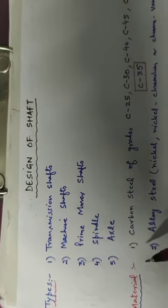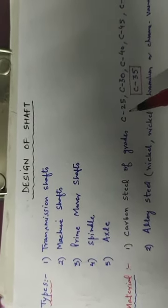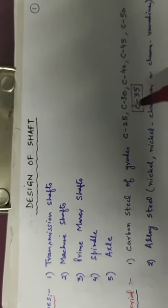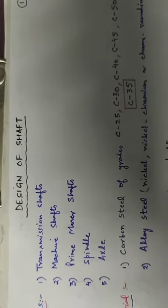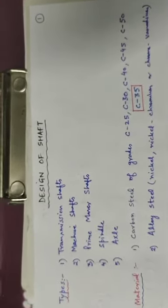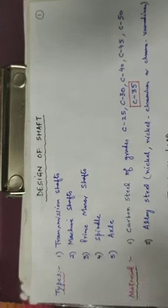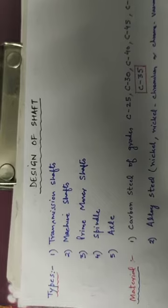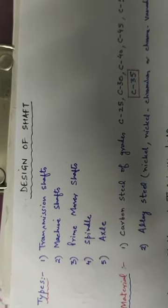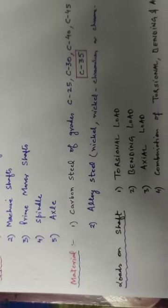The commonly used material for the shaft is carbon steel of grade C25, C30, C40, C45, C50, where 25, 30, 40 refers to the percentage of carbon — 0.25%, 0.30%, etc. The most commonly used grade is C35. Shafts are also made of alloy steel such as nickel, nickel-chromium, or chromium-vanadium. The material is selected such that it has sufficient strength and low sensitivity to stress concentration.